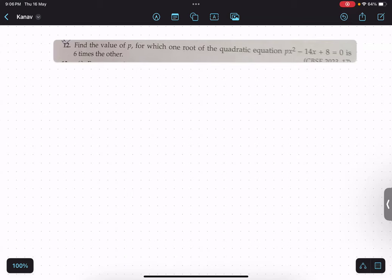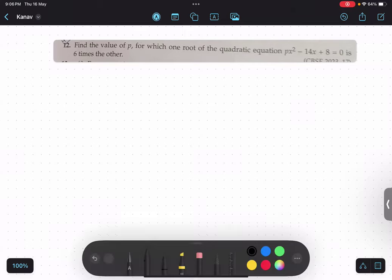Find the value of p for which one root of the quadratic polynomial is six times the other. So first of all we have to define what are the roots.